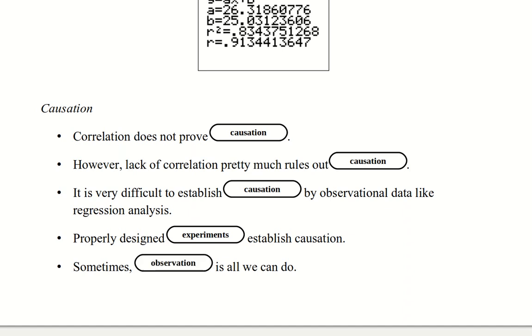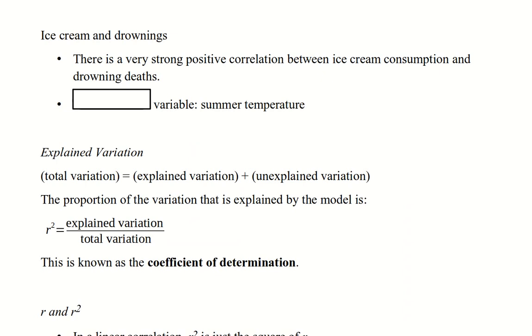A properly designed experiment is used to establish causation. Although sometimes, even a classical statistician will acknowledge that sometimes observation is the best that we can do. The example of this that we've been using all semester is ice cream and drowning. There is a very strong positive correlation between ice cream consumption and drowning deaths. And, of course, that's because of summer temperatures. There's that lurking variable that causes both to happen at the same time.